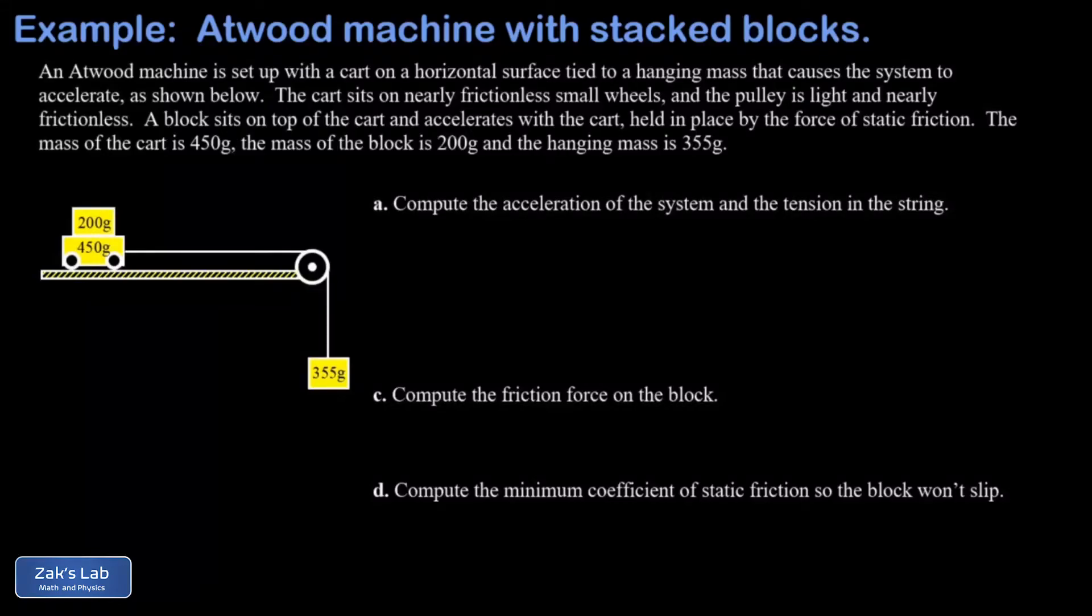In this video, we're given an Atwood machine that has a bit of a complication. So I have a horizontal track with a cart rolling along with wheels that are essentially frictionless. But that cart has a block stacked on top of it,